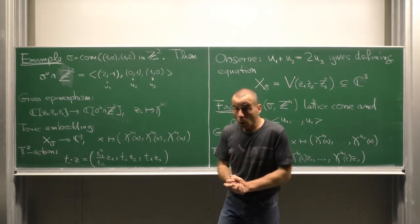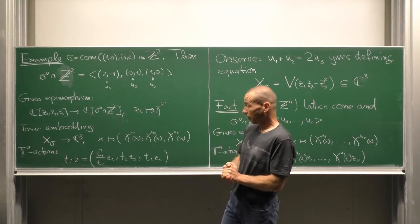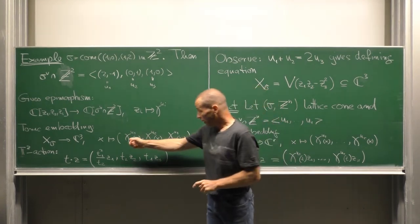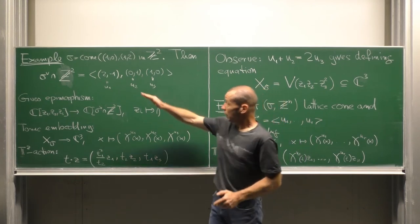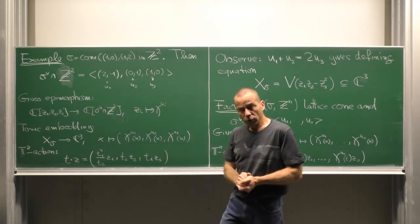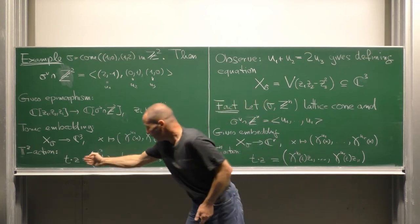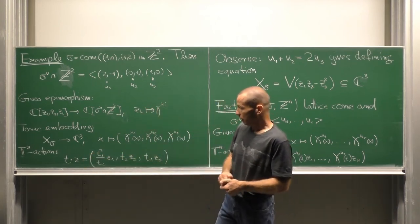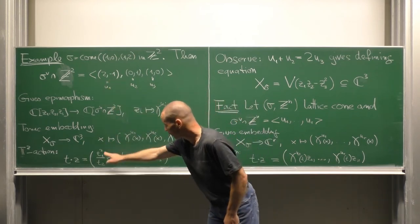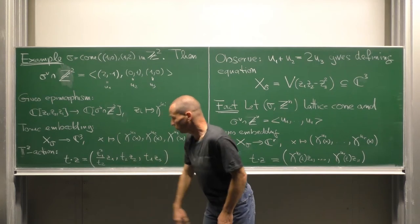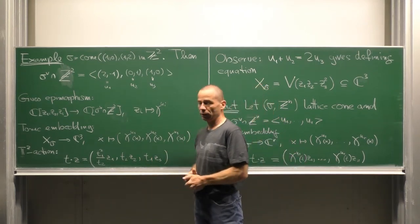We also know how the torus, in this case T^2, acts, namely via these as characters. Now looking at the exponent vectors, this means that t multiplied to z is, in the first component we have z vector, that means t_1^2 over t_2 times z_1 and similarly t_2 z_2, t_1 z_3.